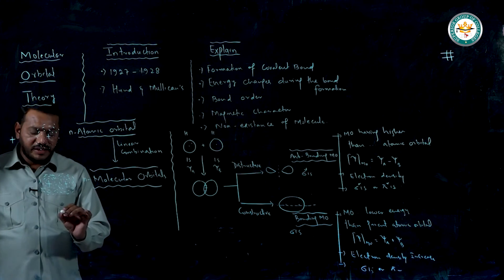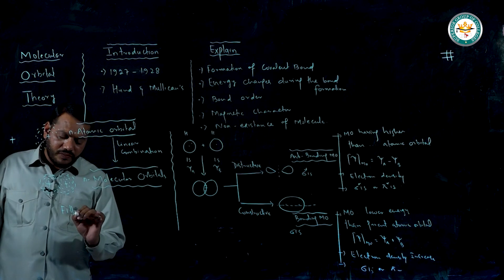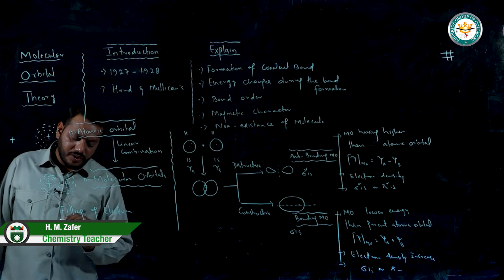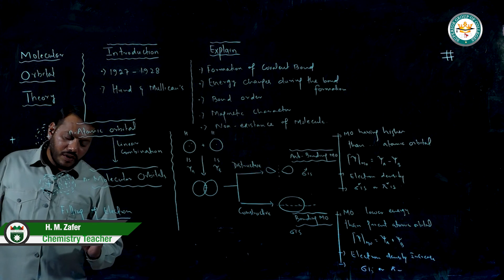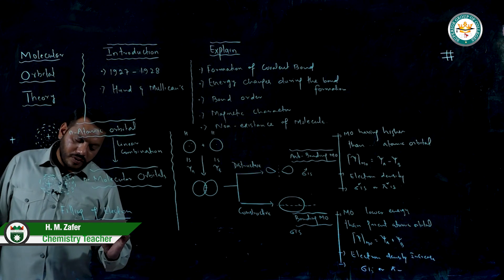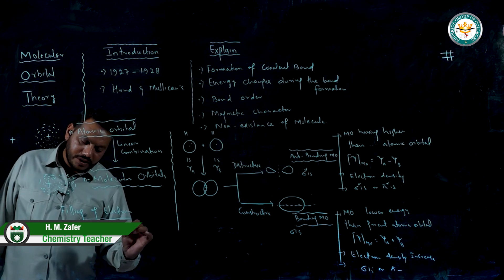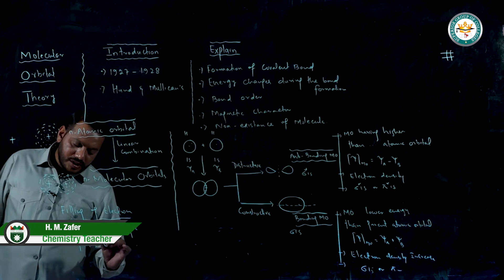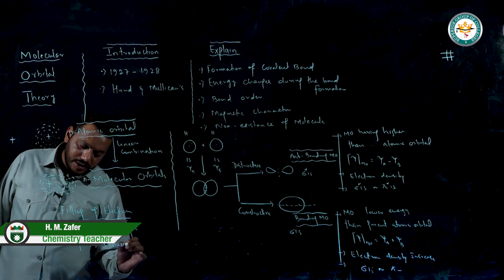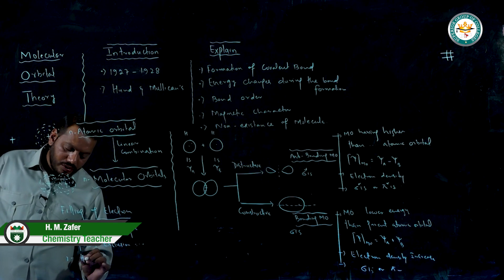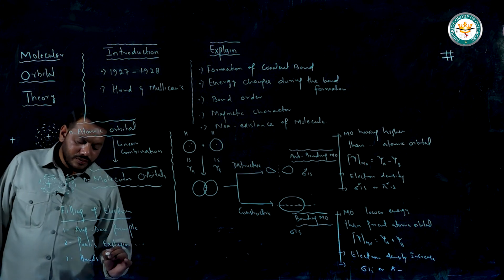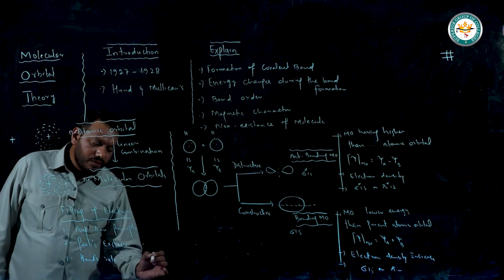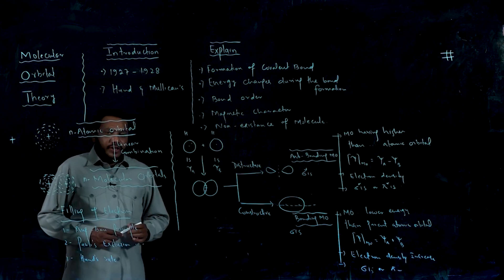Now, the filling of electrons in molecular orbitals follows the same rules as in valence bond theory. The filling of electrons is according to the Aufbau principle, the Pauli exclusion principle, and Hund's rule.